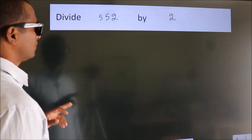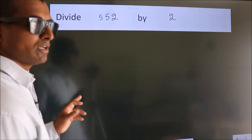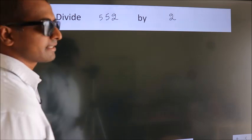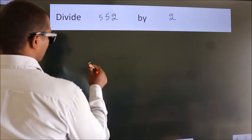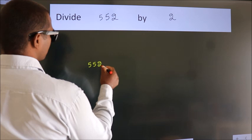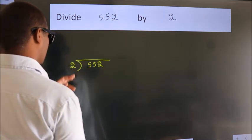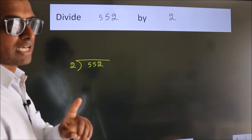Divide 552 by 2. To do this division, we should frame it in this way: 552 here, 2 here. This is your step 1.